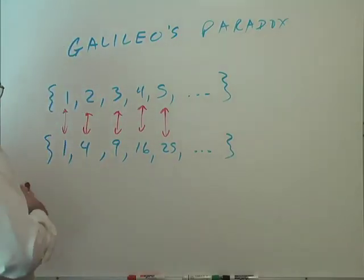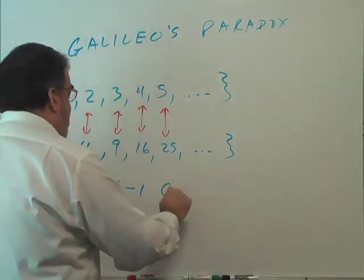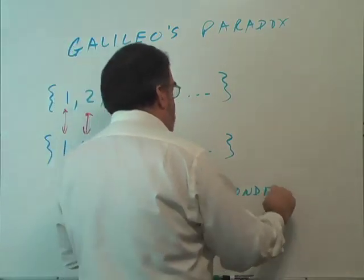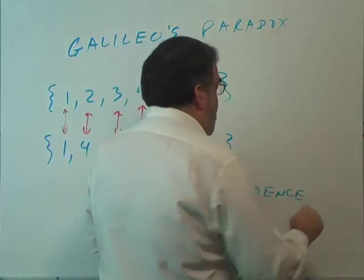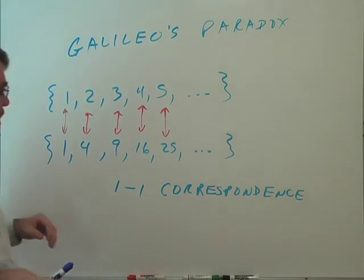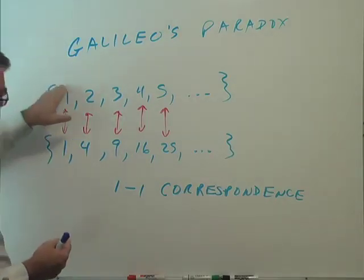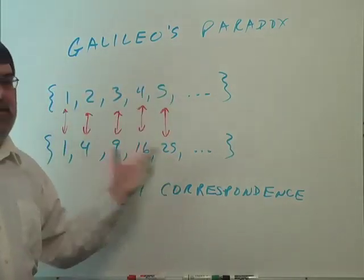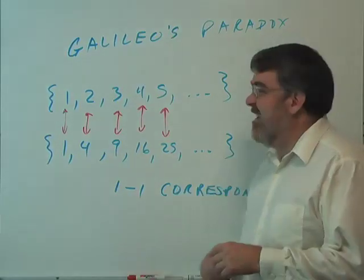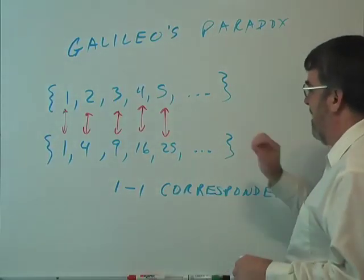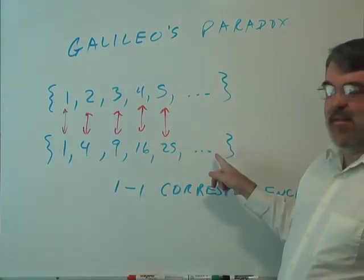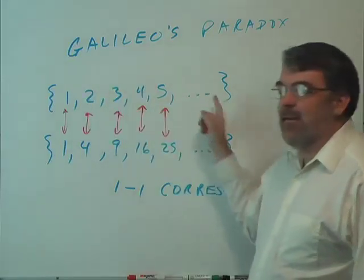And so there's a one-to-one correspondence, which plays a pretty big role in mathematics, in parts of mathematics, the idea of one-to-one correspondences. But anyway, as you can see, it basically means that everything in this set matches up with everything here, and vice versa. Now, what do you see that's kind of odd about this?